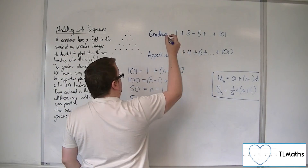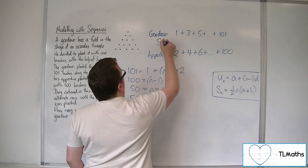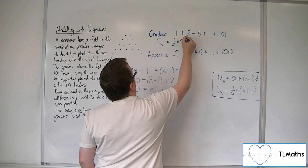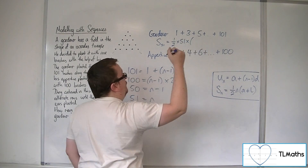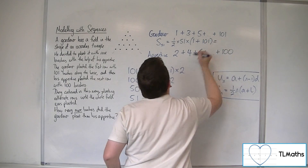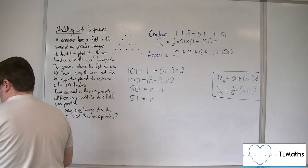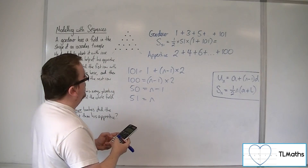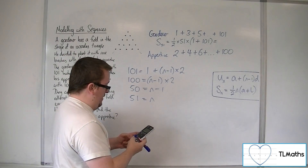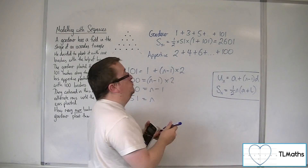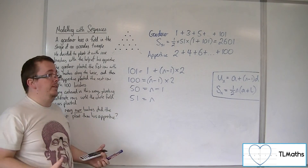So we know that the sum of the first 51 rows is equal to (1/2) × 51 × (first + last terms). We pop that into the calculator: (1 + 101) × 51 ÷ 2. That gives us 2,601 rose bushes that the gardener planted.